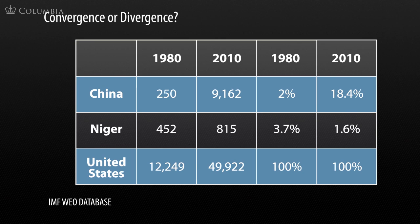If you ask the question about divergence and convergence: China went from being around 2% of U.S. gross domestic product per person to being around 20% of U.S. gross domestic product per person. Still far below the U.S. income level even adjusting for price levels, but narrowing the gap very quickly. Niger, sadly, started out at around 4% of the U.S. per capita level, but by 2010 had fallen to less than 2% — in other words, experiencing divergence rather than convergence.